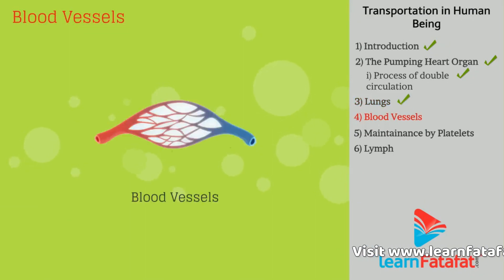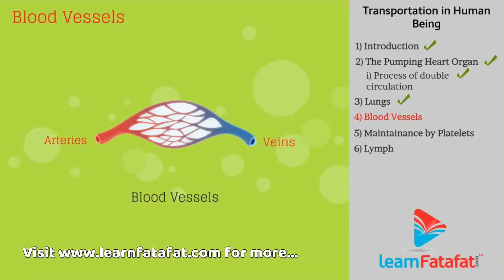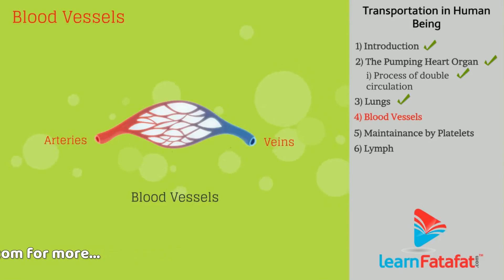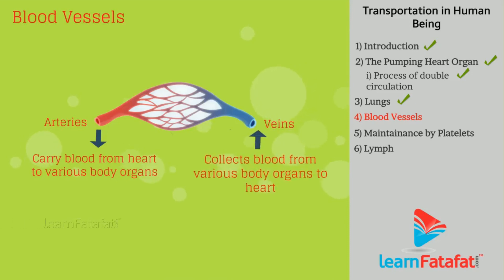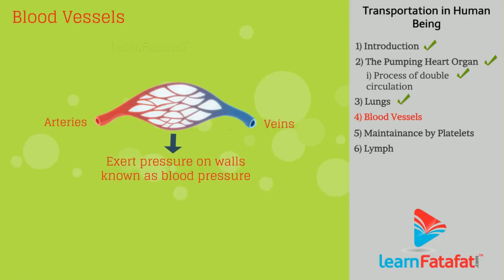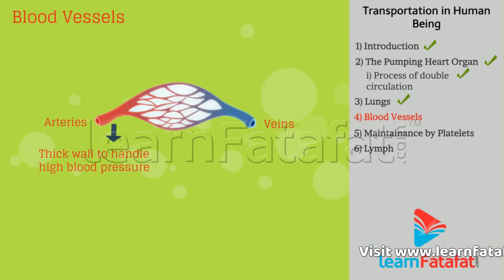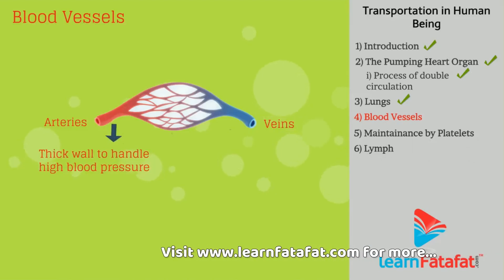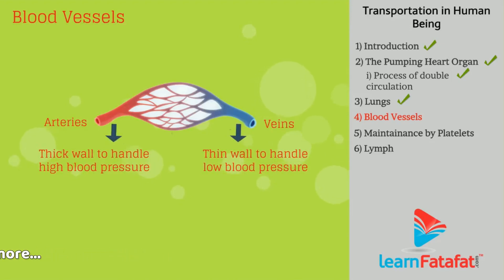Blood is carried by blood vessels. Two types of blood vessels are arteries and veins. Arteries carry blood from the heart to various body organs. Veins collect blood from various body organs and bring it back to the heart. Blood exerts pressure on the walls of vessels, called blood pressure. Arteries have thick elastic walls to handle high blood pressure, while veins have thin walls since blood pressure in them is low.